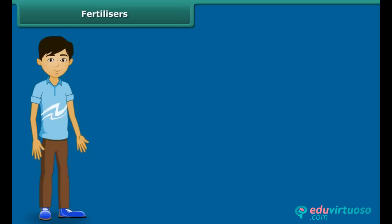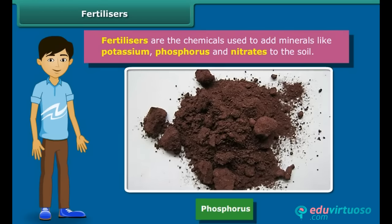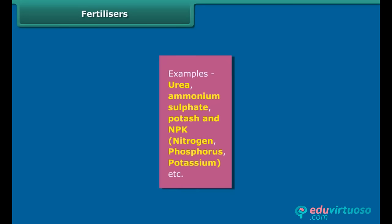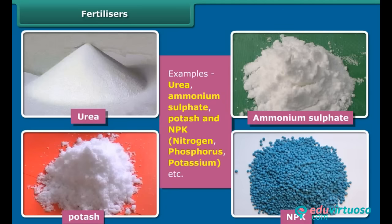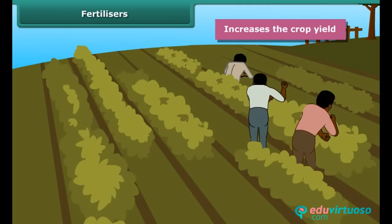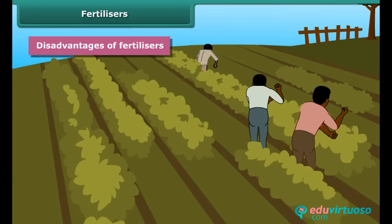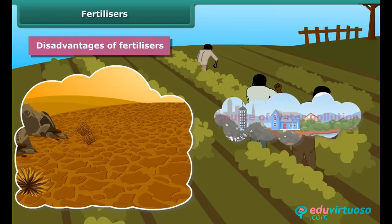Like manure, fertilizers are also used in replenishing the lost nutrients and minerals in the soil. Fertilizers are chemicals used to add minerals like potassium, phosphorus and nitrates to the soil. Fertilizers are produced in factories. Some examples of fertilizers are urea, ammonium sulfate, potash and NPK (nitrogen, phosphorus and potassium). The use of fertilizers increases the crop yield. However, excessive use of fertilizers makes the soil less fertile, and they have also become a source of water pollution.